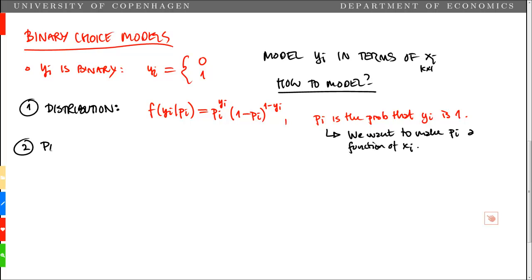To do this, to model this, we need a parameterization that has this feature that pi is a function of xi. In general terms, this means that we specify pi, which is the probability that yi is equal to 1 given characteristic xi, and we simply specify that as a function of xi.